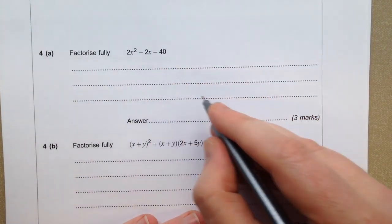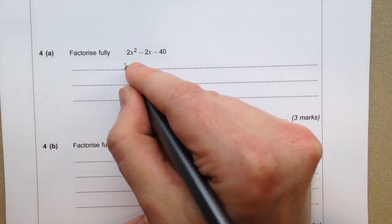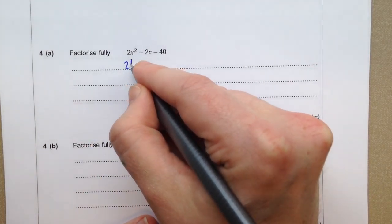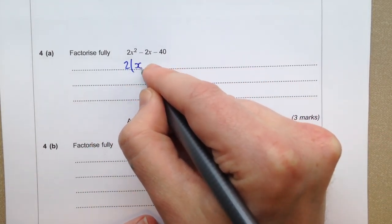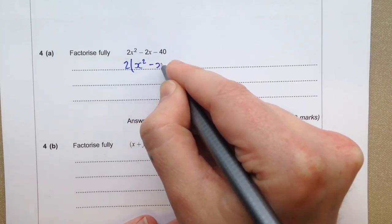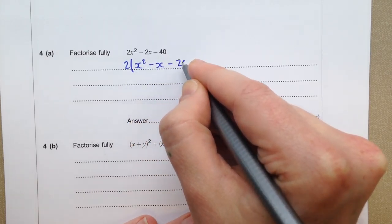Now we've got some factorising to do here. I'm going to make life slightly easier for myself by taking 2 out as a factor. 2 lots of x squared, take away x, take away 20.